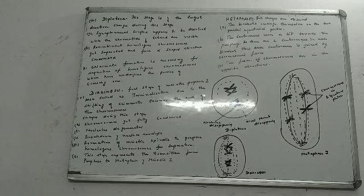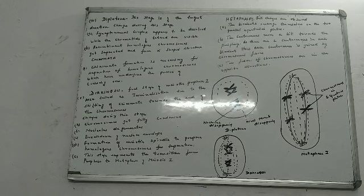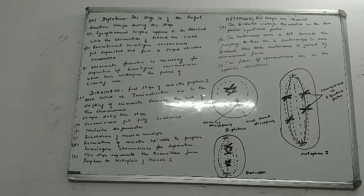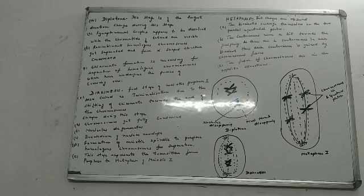Second thing: the recombinant homologous chromosomes now get separated, and they form an X-shaped structure which is known as chiasmata — C-H-I-A-S-M-A-T-A. Recombination had already taken place, so these recombinant homologous chromosomes will get separated. When they get separated, they form an X-shaped structure known as chiasmata.